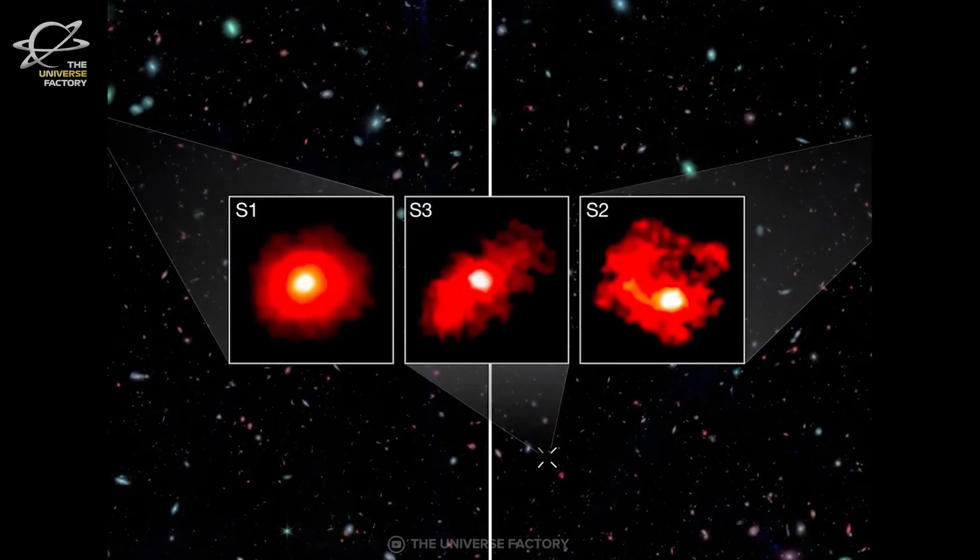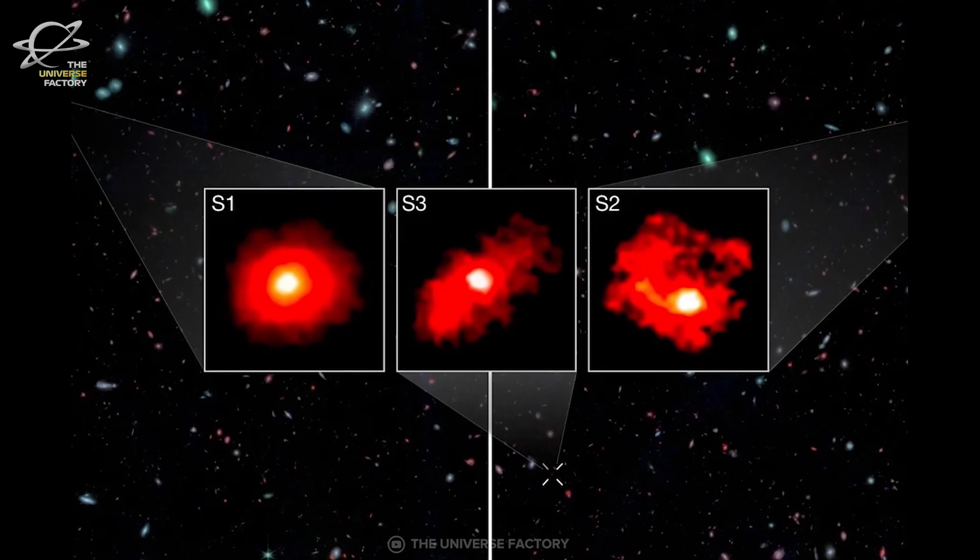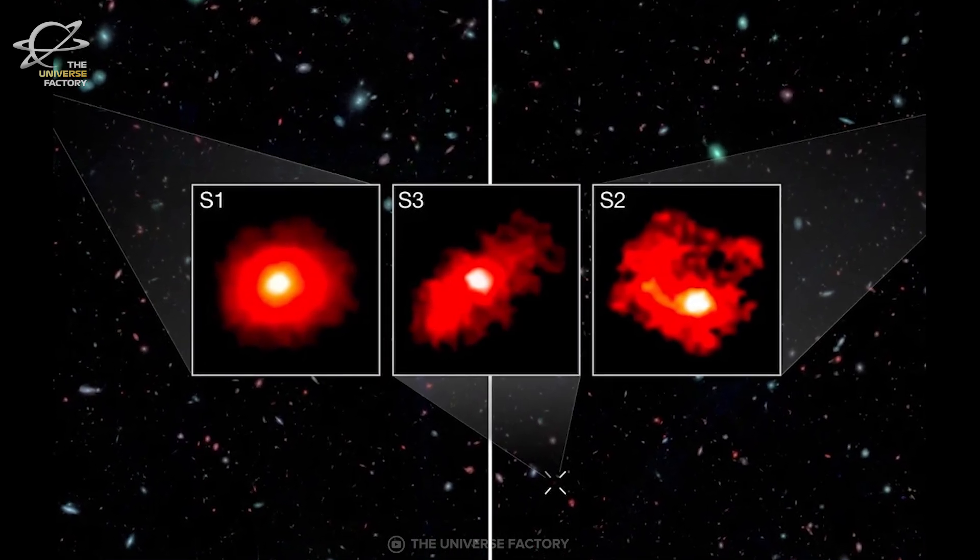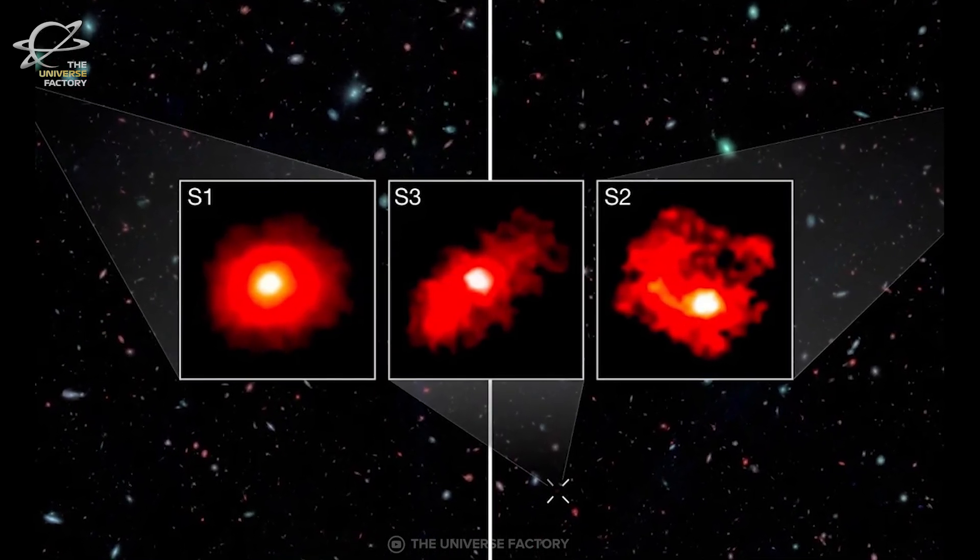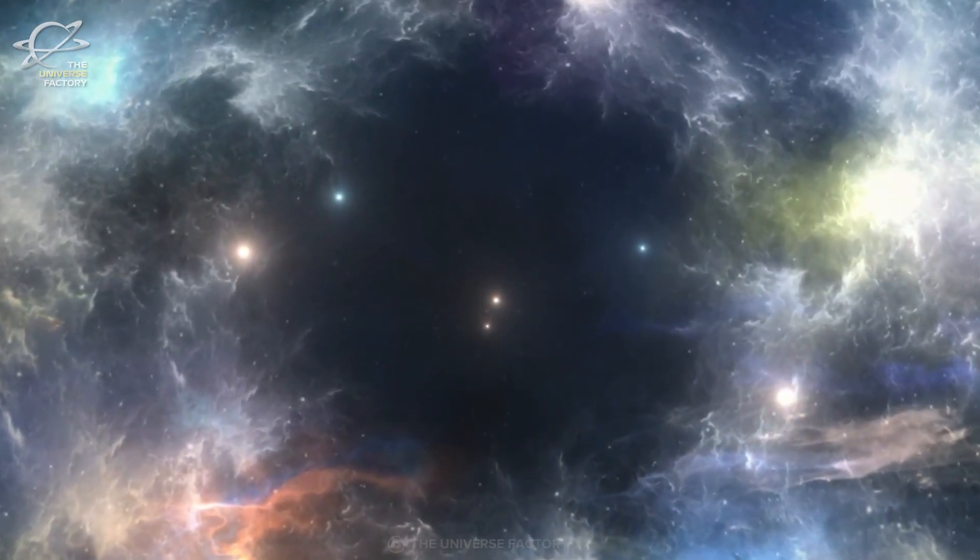So how did these galaxies form so quickly? Could there have been unknown processes at work, or are we missing a key piece of the cosmic puzzle? And what does this mean for our understanding of the universe's origin and its evolution?